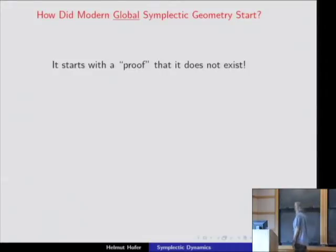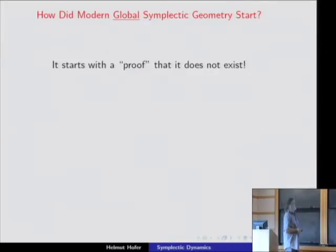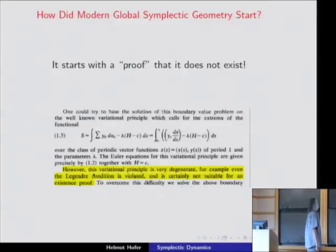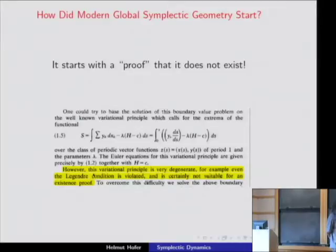How did modern global symplectic geometry start? It actually starts with a proof that something doesn't exist. The proof is a quotation from a paper of Moser. Moser was interested in results proved by Alan Weinstein and generalized them. The action principle — for which you find critical points — today produces what is called Rabinowitz–Floer theory. All these cousins produce the rest of symplectic geometry, along with other problems in Yang–Mills, Seiberg–Witten–Floer theory, and so on. They all have characteristic features. However, this variational principle is very degenerate — even the Legendre condition is violated and is certainly not suitable for an existence proof. Today, one uses it precisely for this.